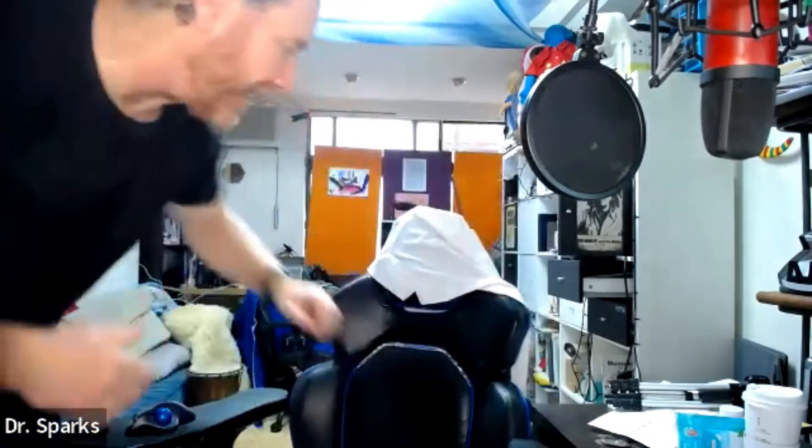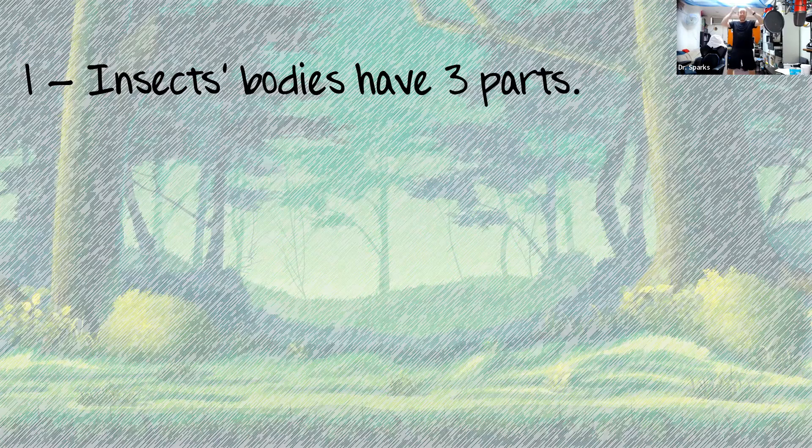So let's go over what makes an insect. Boys and girls, I need you guys to stand up and do these actions along with me. Come on and let's stand up. Move my chair off to the side and everybody say with me: one, two, three — insects' bodies have three parts.